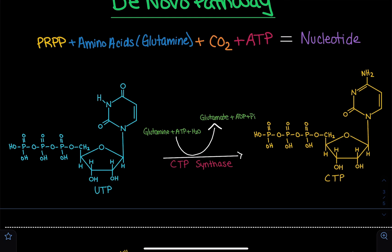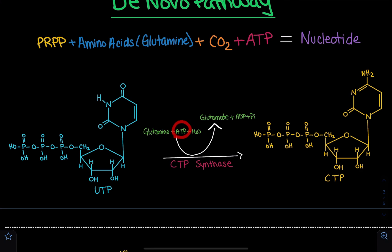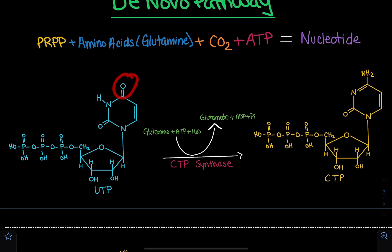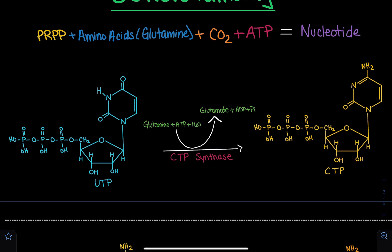This reaction is catalyzed by CTP synthase. As a result, we get the products glutamate — the conversion of glutamine to glutamate — and we're utilizing ATP. What's going to happen is that we use the terminal phosphate on ATP and add it to this oxygen, creating a more reactive center. The phosphate acts as a good leaving group for the amino group to come in. We're then left with ADP, and that inorganic phosphate is also lost, because the phosphate binds but is then replaced with the NH2 group, and we end up with CTP — cytosine triphosphate.